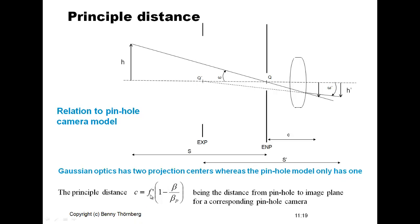This principal distance C is very often approximated with the focal length of the lens. However, as the formula shows, this is not always true. If the ratio between beta — the magnification — and the pupil magnification is very small, then this approximation holds close to true. This explains how the pinhole camera model relates to the Gaussian optical lens model.